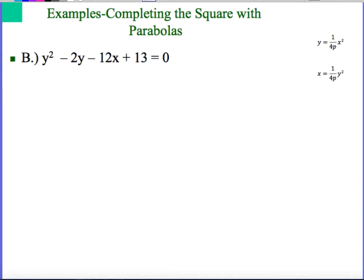Second example that we'll look at, letter B: y² - 2y - 12x + 13 = 0. This time I'm seeing the y squared and no x squared, so I can tell that it's a parabola. Using the y squared, we're going to be using that second equation. That means it's going to be opening to the side, either to the right or to the left.